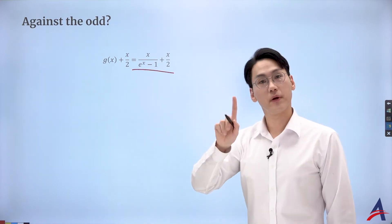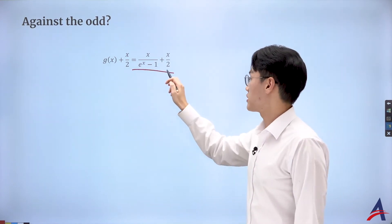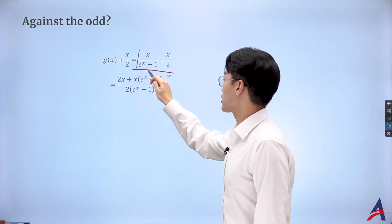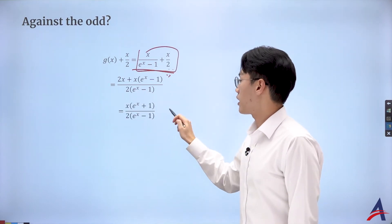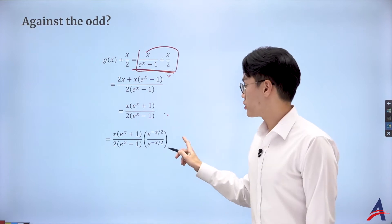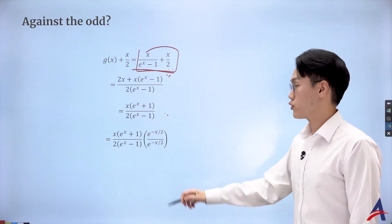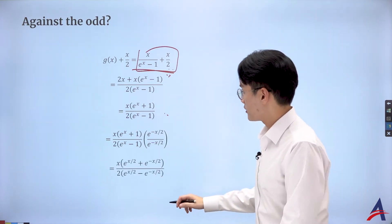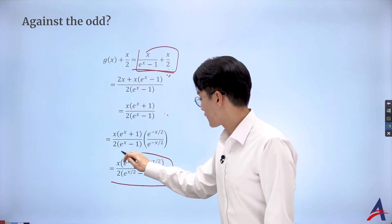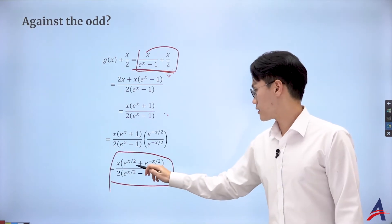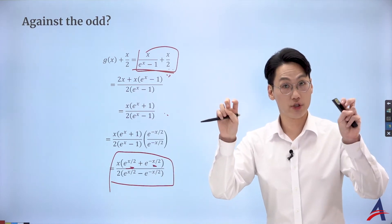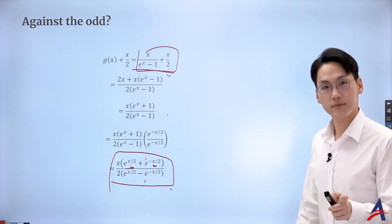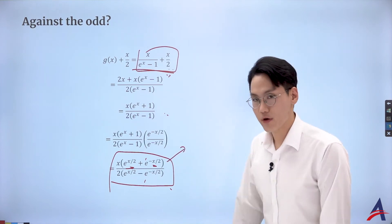Unfortunately, this new function's derivative no longer gives the Bernoulli numbers directly since we removed the odd term. But let's do some algebra: put things into a common denominator, then divide top and bottom by e to the power of negative x over 2 — which is essentially multiplying by 1, so nothing changes. I get this fancy-looking function: it looks like exponentials with sum and difference forms. Do you remember where you might have seen this before? These functions are very popular, especially for Paper 3 — they've appeared since 2021 with hyperbolic function questions.